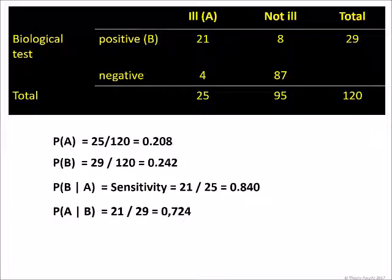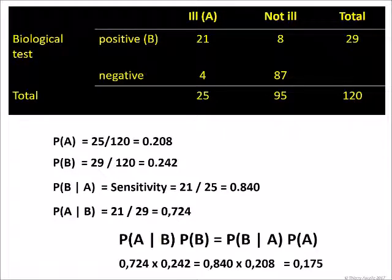or the ability of the test to identify an ill patient. The probability of A given B, the probability of being ill if the test is positive, 21 positive ill divided by 29 positive tests, equals 0.724. I leave it to you to check this equality. 0.724 multiplied by 0.242 equals 0.84 multiplied by 0.208.